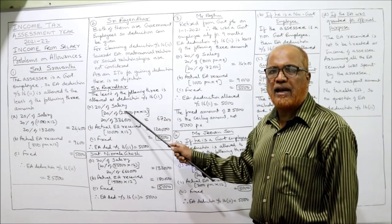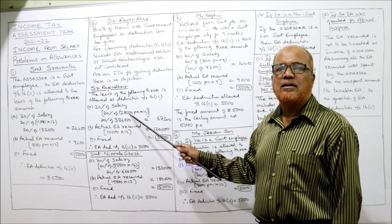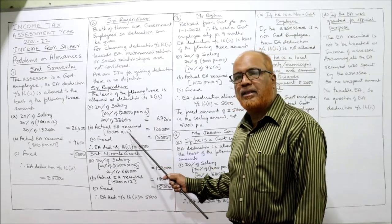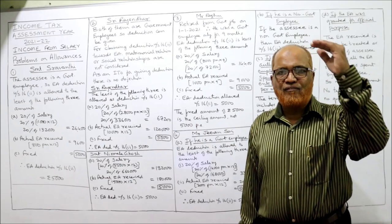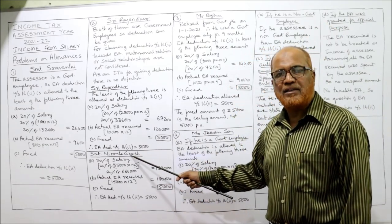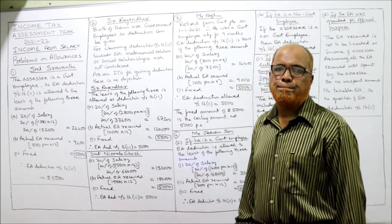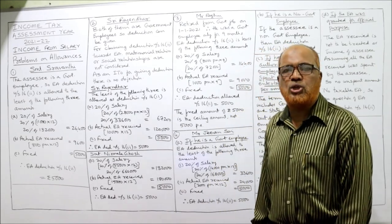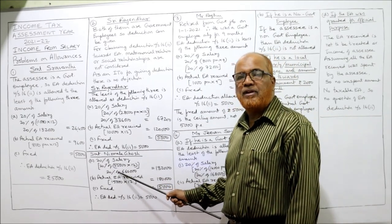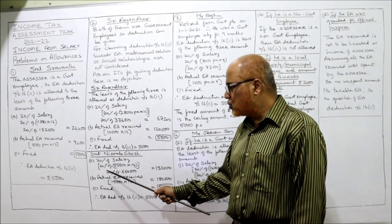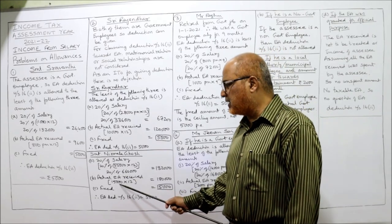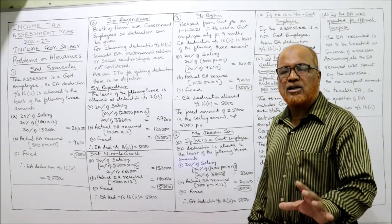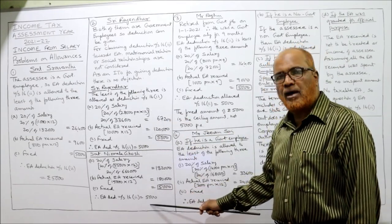For Sri Rajendra, the least of the three amounts: 20% of salary — 28,000 × 12 = 3,36,000 × 20% = Rs. 67,200. Actual EA received — 10,000 × 12 = Rs. 1,20,000. Fixed ceiling = Rs. 5,000. Least is Rs. 5,000 — EA deduction under Section 16-2 is Rs. 5,000. For Srimati Nirmala Ghosh: 20% of salary — 55,000 × 12 = 6,60,000 × 20% = Rs. 1,32,000. Actual EA — 15,000 × 12 = Rs. 1,80,000. Fixed ceiling = Rs. 5,000. Least is Rs. 5,000 — EA deduction for Nirmala Ghosh is also Rs. 5,000.